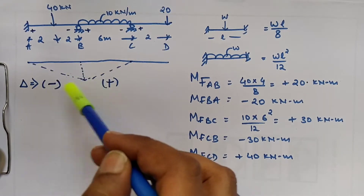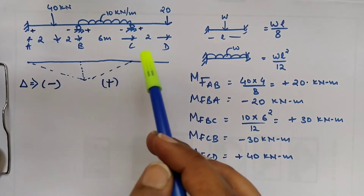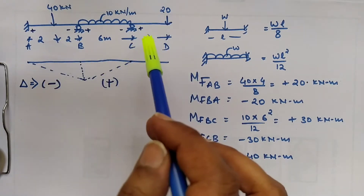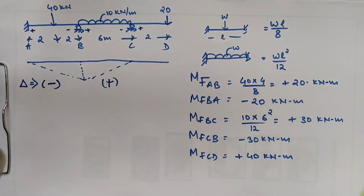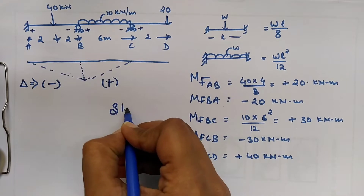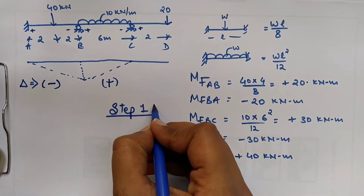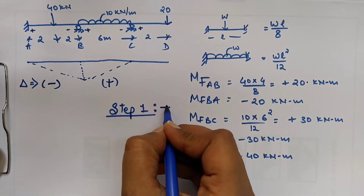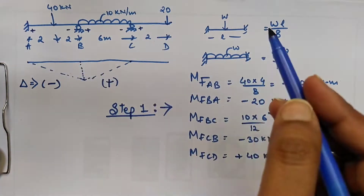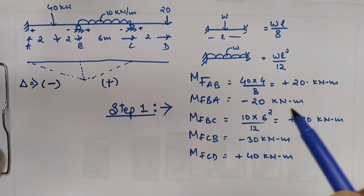On the left side and right side: whenever the right side support is sinking, we assume it as negative; when the left side support is sinking, we assume it as positive. Step one is to find out all the fixed end moments. For UDL and the point load, we have written the formula.